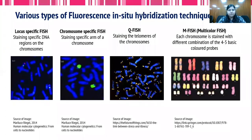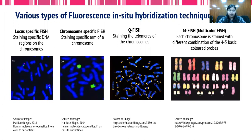There are various types of FISH techniques. For example, locus-specific FISH, in which probes are designed to target a specific region on the chromosome, and only that region will be seen under the microscope. Another is chromosome-specific FISH, wherein a specific arm of the chromosome is labeled and visualized under the microscope.